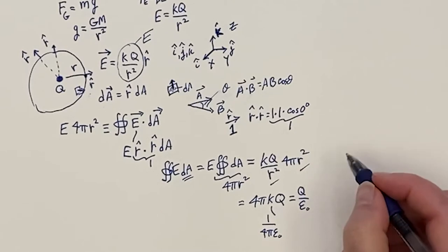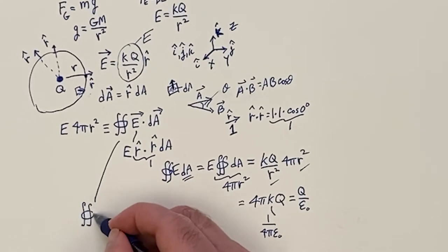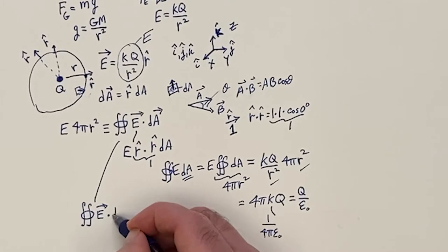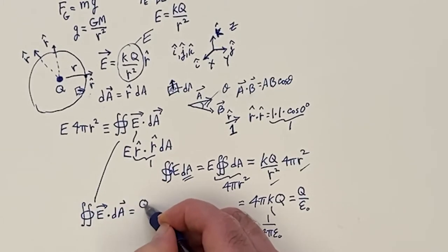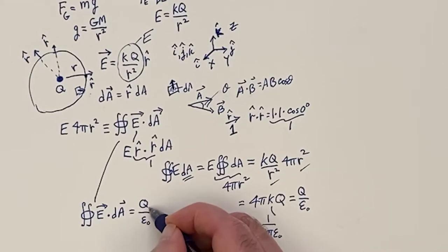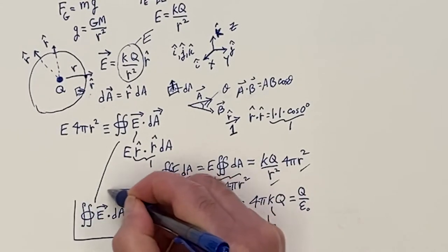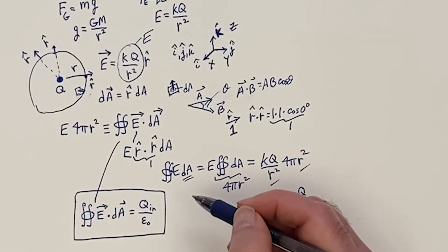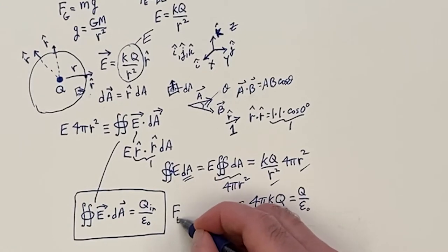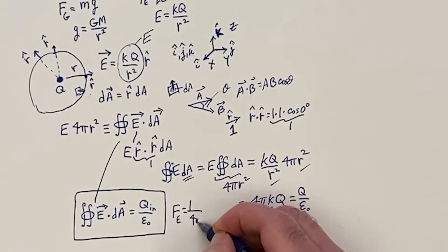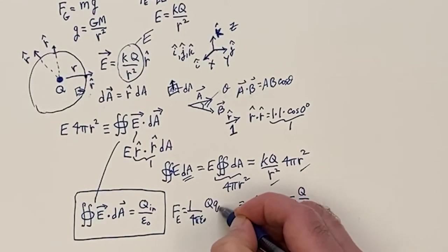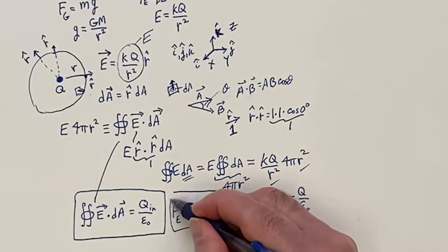So now you have this cool equation: if you take the electric field dot product with the area element, you get Q inside over epsilon naught. The Q is inside the surface — you have a volume but you're looking at a surface area. That is referred to as the first Maxwell equation, which is a fancy way of writing Coulomb's Law: 1 over 4 pi epsilon naught, Q Q over R squared. That's the first law of electricity and magnetism.